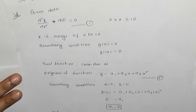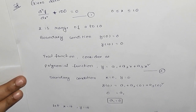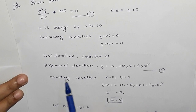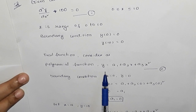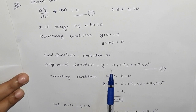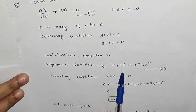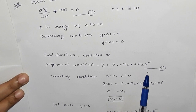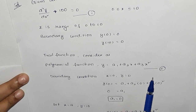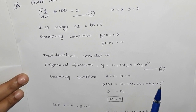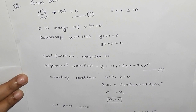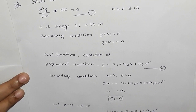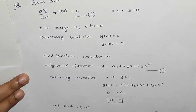The trial function is considered as a polynomial function: y = a1 + a2·x + a3·x². We then take the second derivative d²y/dx² of this polynomial function.